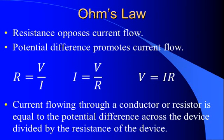Resistance opposes current flow, and we know potential difference leads to more current flow, so there must be some relationship between resistance, current flow, and potential difference. And there is. This was put together by George Ohm in the formula resistance equals potential difference over current.